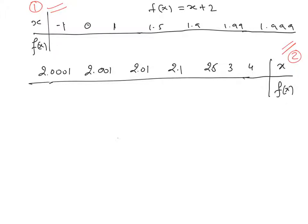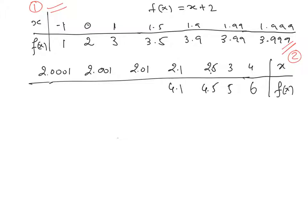To find the values of f(x): when x = -1, f(x) = 1; when x = 0, f(x) = 2; when x = 1, f(x) = 3; then 3.5, 3.9, 3.99, 3.999. In the second table, x approaches 2 from the right — when x = 4, f(x) = 6; then 5, 4.5, 4.1, 4.01, 4.001.